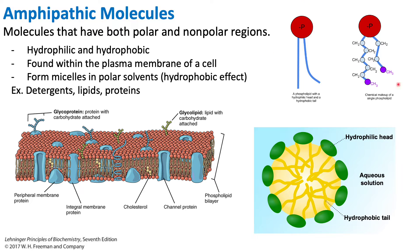So where do we see phospholipids? We see them in our cell membranes. Within all our cells in humans, we see this cell membrane where on the outside we have the phosphate head and on the inside we have that hydrocarbon chain — the lipid part.